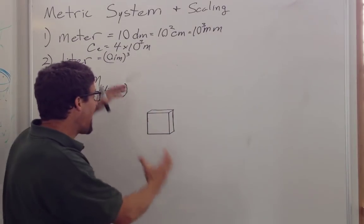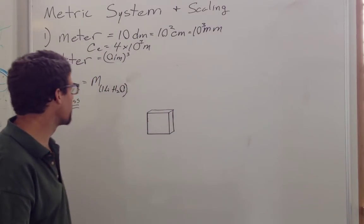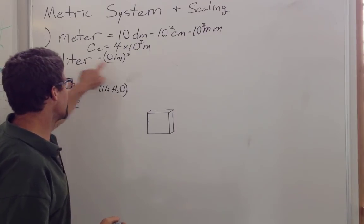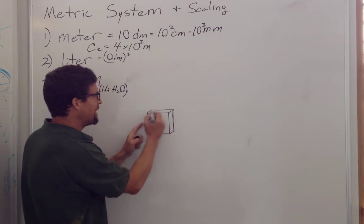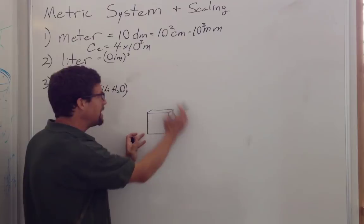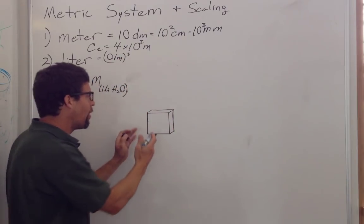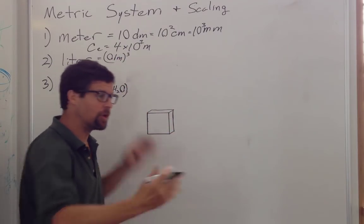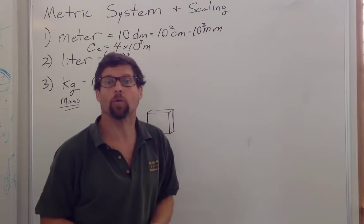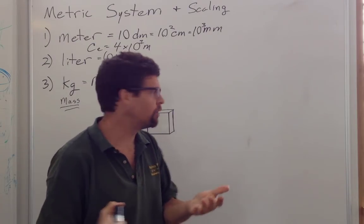So let's take a look at scaling. What happens as we make objects bigger? So for instance, a liter is 1 cubic decimeter or 1 tenth of a meter cubed. How about if we had 1 meter cubed, a cubic meter of water? What would that mass be? What would its volume be?